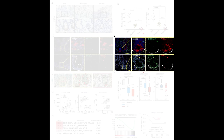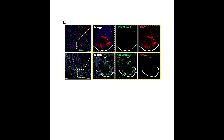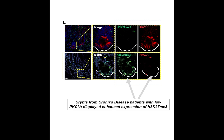Panel E shows that Crohn's disease crypts with low PKC iota levels displayed enhanced expression of the repression marker histone H3K27 trimethylated, consistent with a model whereby PKC iota deficiency results in epigenetic changes that inhibit expression of master transcription factors in Paneth cell differentiation.